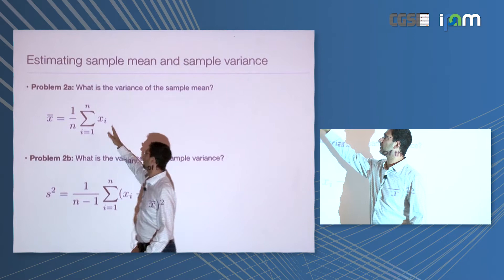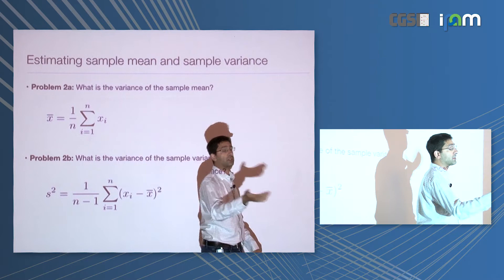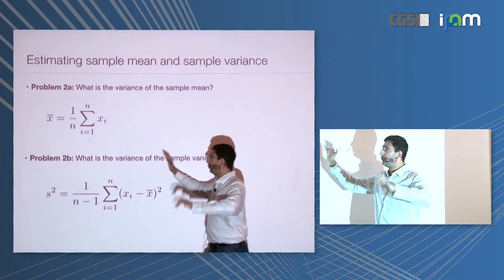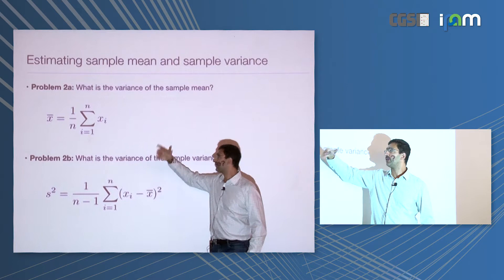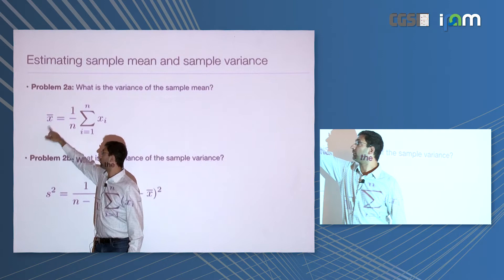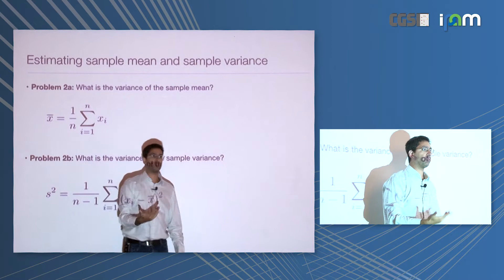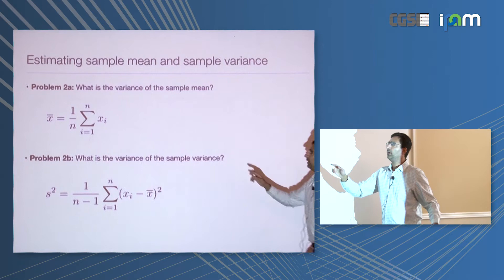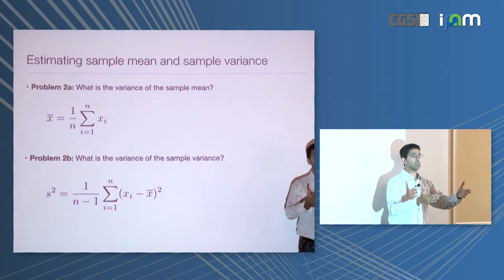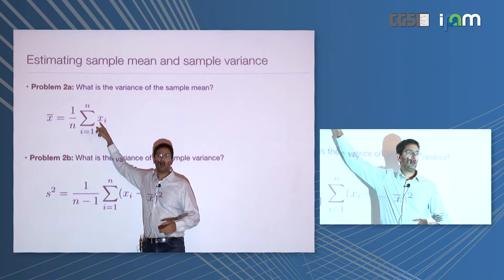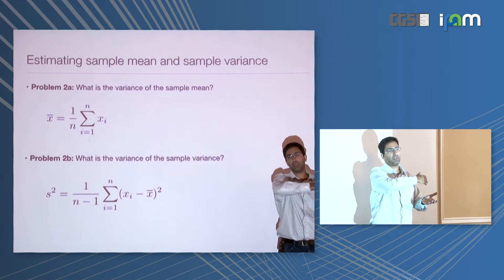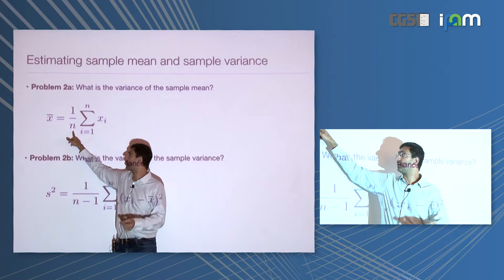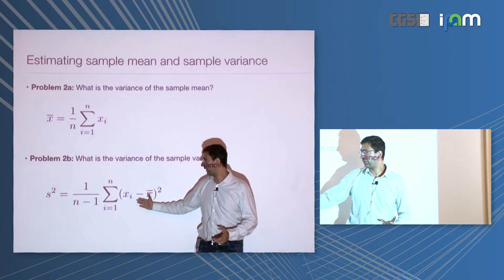If you compute a mean from n numbers drawn from a normal distribution, the variance of that mean estimator is the variance of the distribution divided by n. The variance is not something you can control — it comes from the experiment — but n is your number of replicates. The more replicates, the less variance on the mean estimator. Now, who knows the variance of the variance estimator? For normal random variables, the variance of the variance estimator goes like the variance squared divided by roughly n.